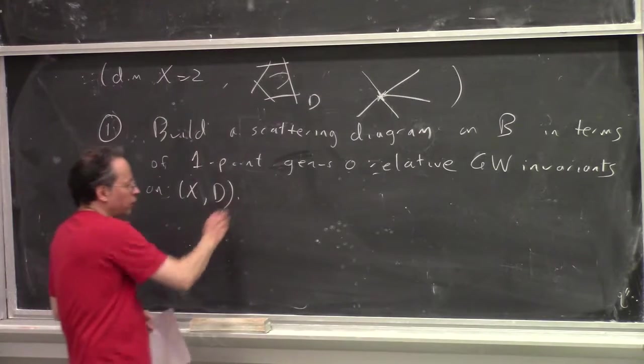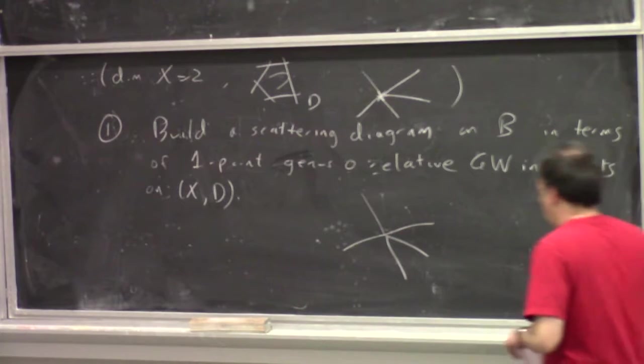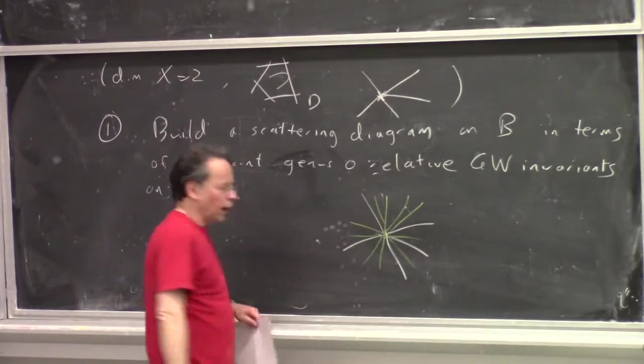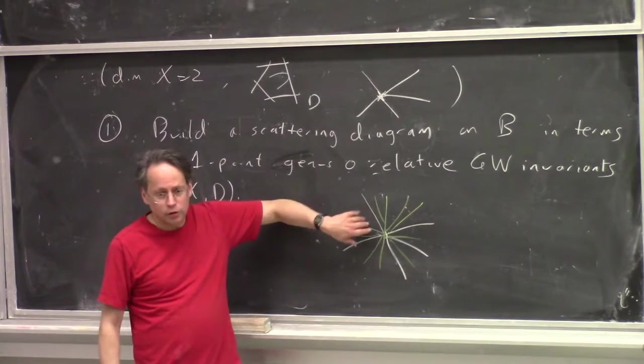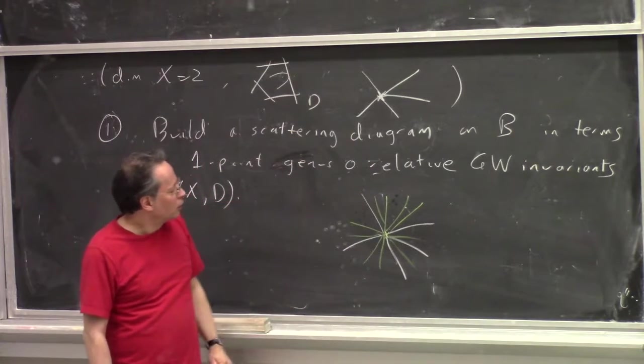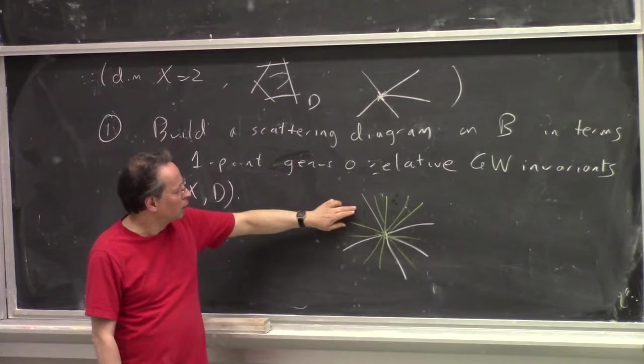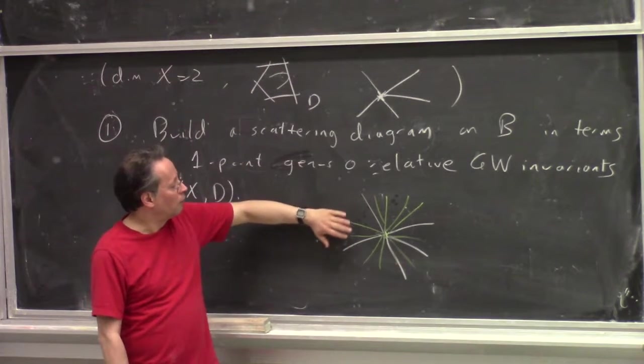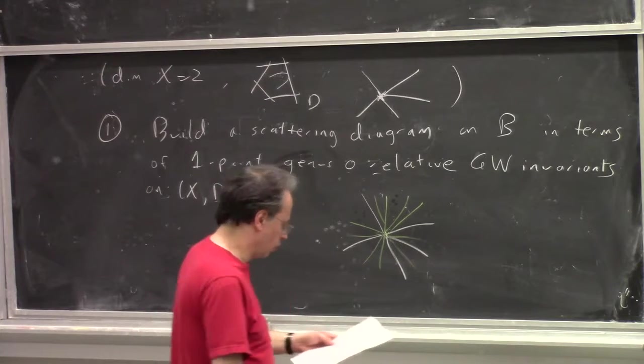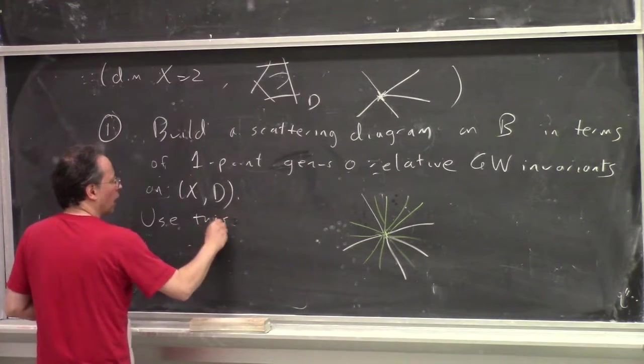So from this, the scattering diagram typically looks like it has a bunch of rays in two-dimensional case emanating from the origin. And then you use these to glue various standard charts together where the functions attached to the walls tell you exactly how you're supposed to glue different charts together.